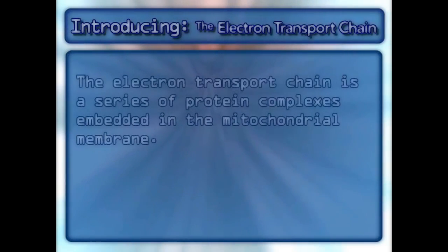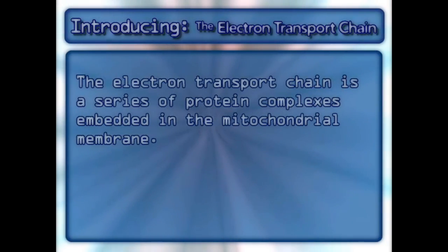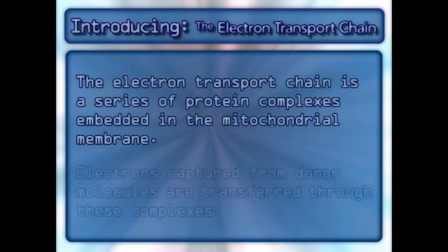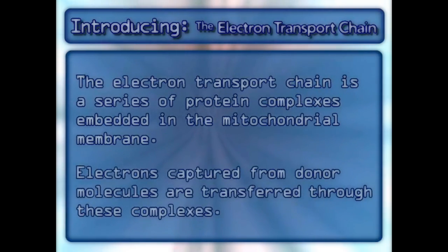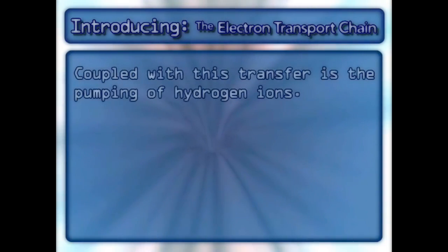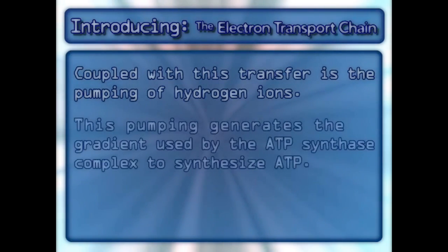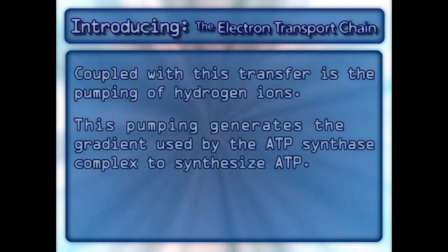The electron transport chain is a series of protein complexes embedded in the mitochondrial membrane. Electrons captured from donor molecules are transferred through these complexes. Coupled with this transfer is the pumping of hydrogen ions. This pumping generates the gradient used by the ATP synthase complex to synthesize ATP.